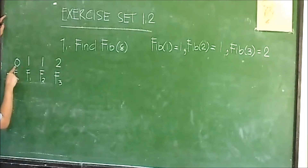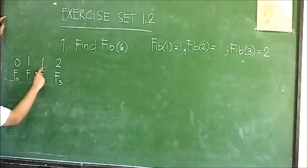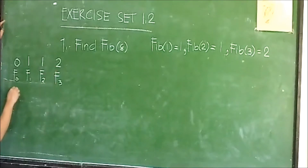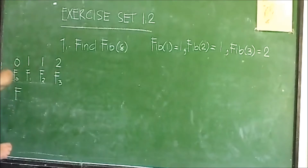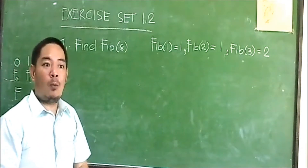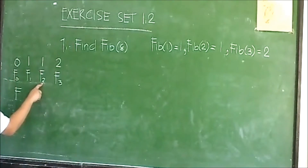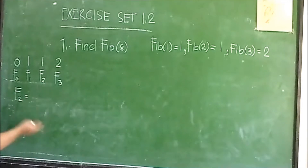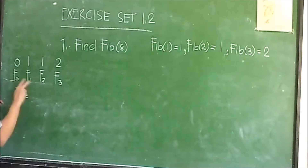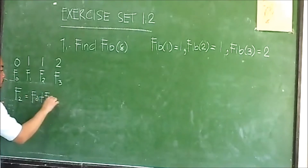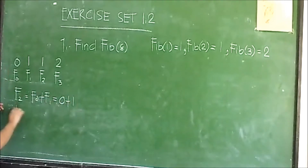So we have: zero plus one is equal to one, and one plus one is equal to two. The pattern is: the sum of the two previous terms is equal to the next term. For example, F sub two — if we are going to find the value of F sub two, that is the sum of the two previous terms: F sub two equals F sub zero plus F sub one, which is zero plus one, so F sub two is one.